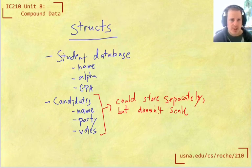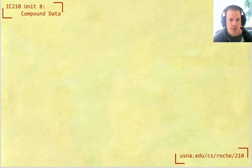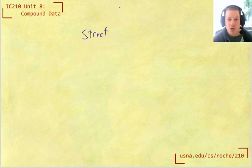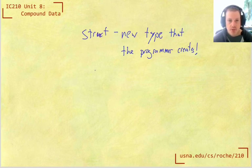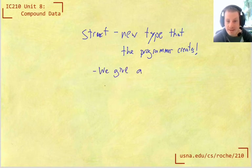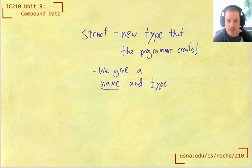So what a struct is going to allow us to do, in C, is really to make a new type that you create. And when we define a struct, we have to say what is in the struct. And so we're going to give a name, and a type to each component of the struct.